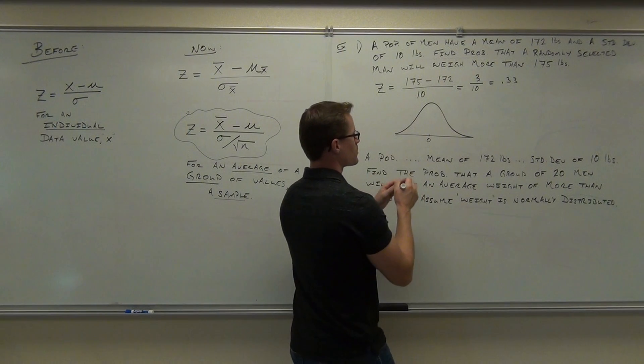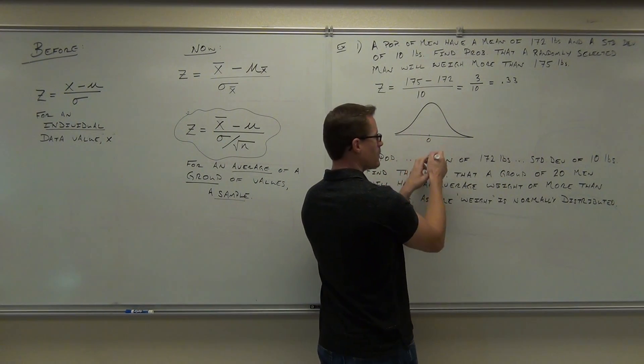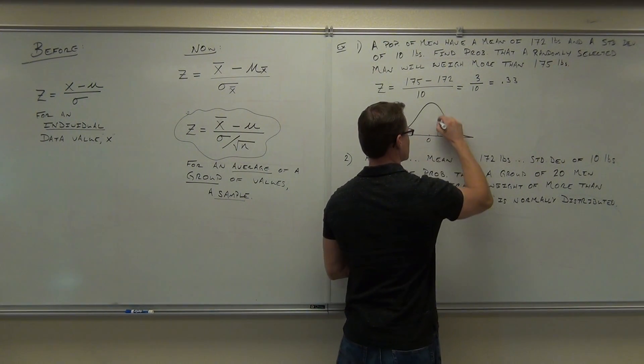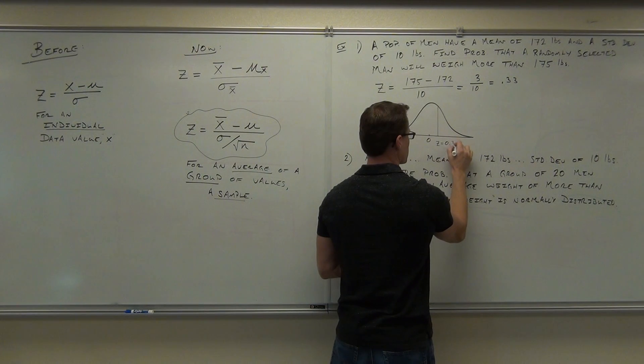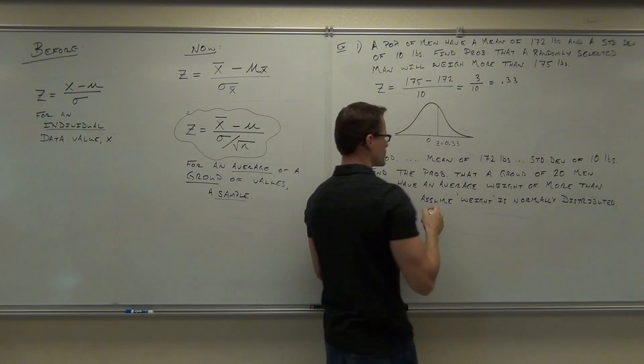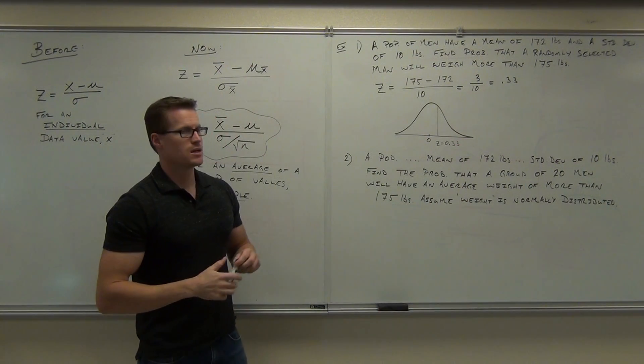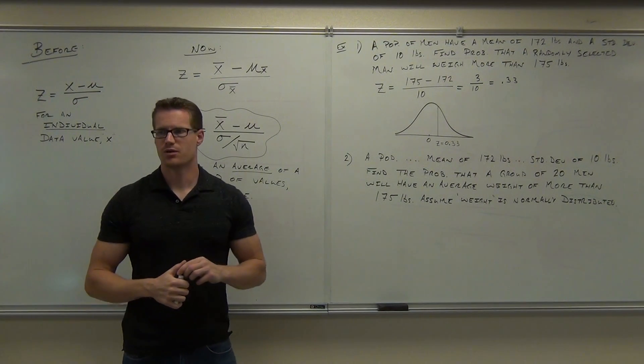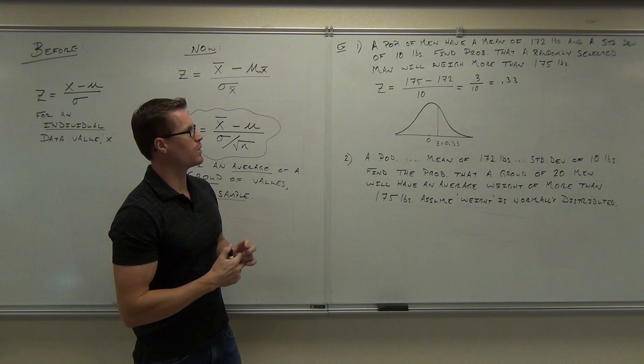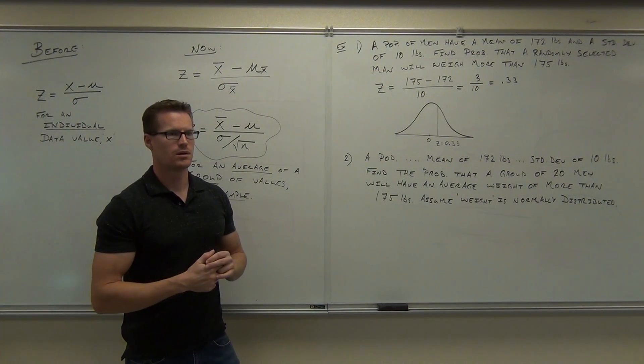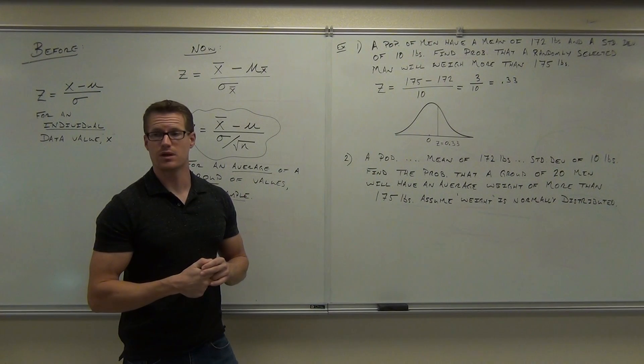Where does the 0.33 go, left or right? Just slightly to the right. You don't have to be exactly accurate. I'm going to put 0.33 just so we're clear. Now, read the question carefully. Find the probability that a randomly selected man will weigh more than. Are you going to shade to the left or the right?